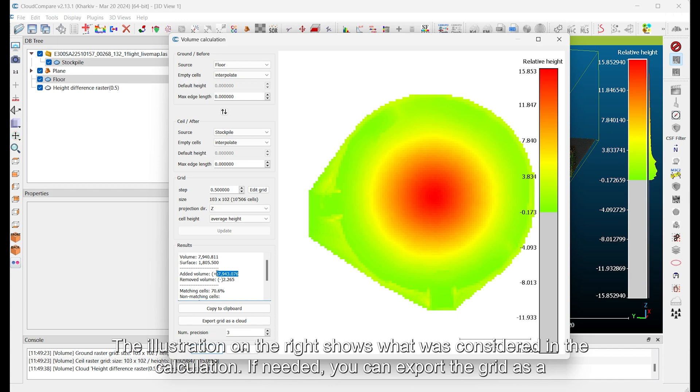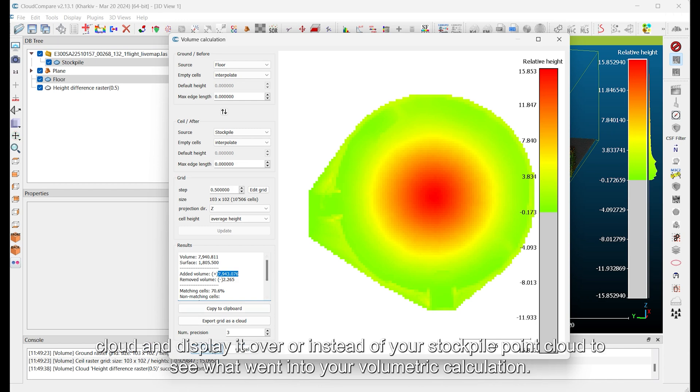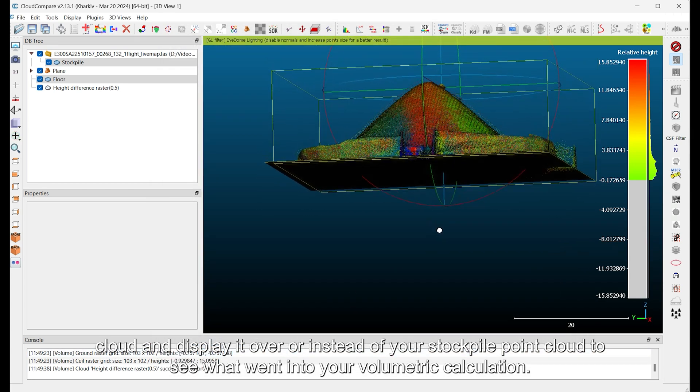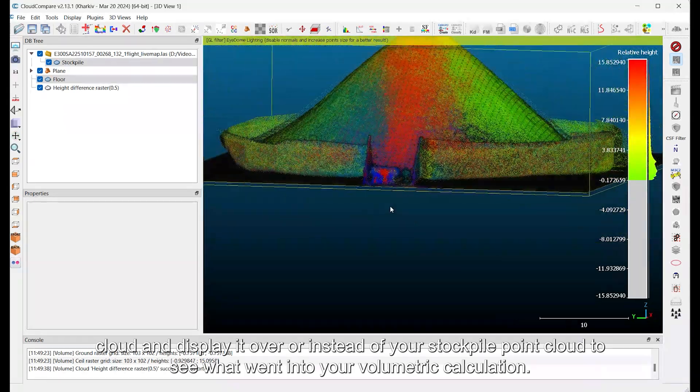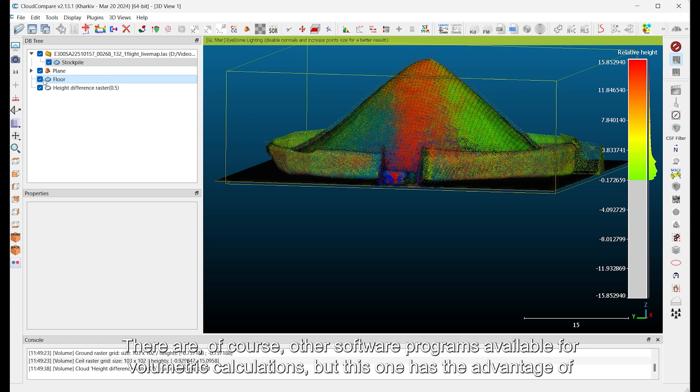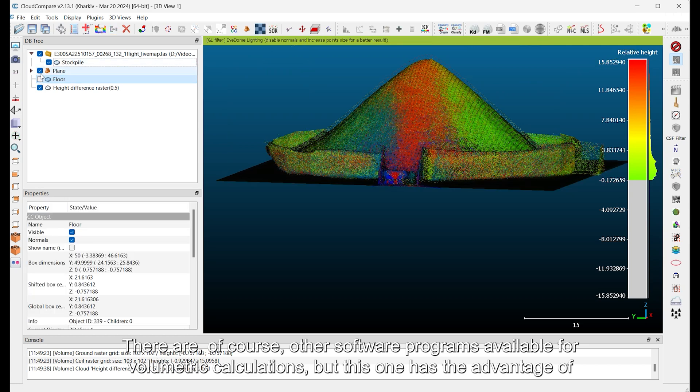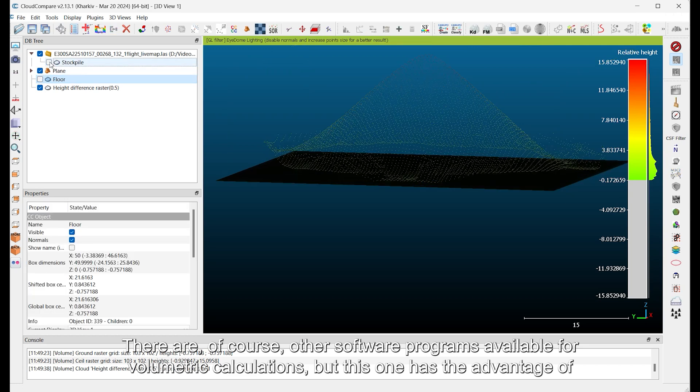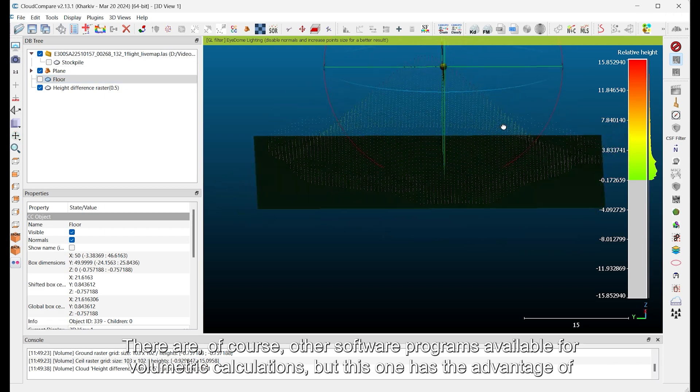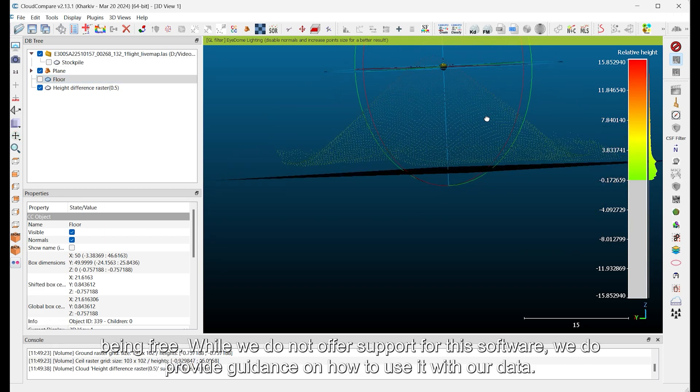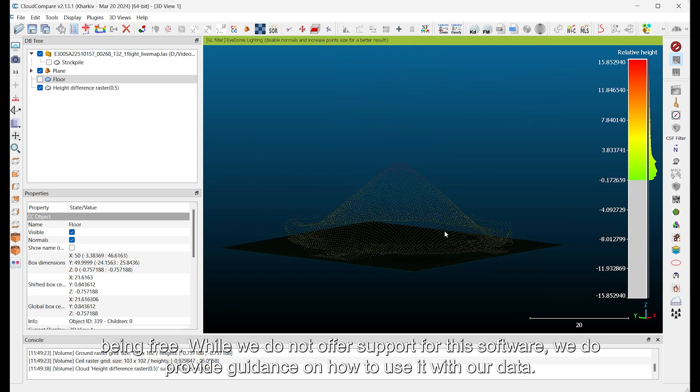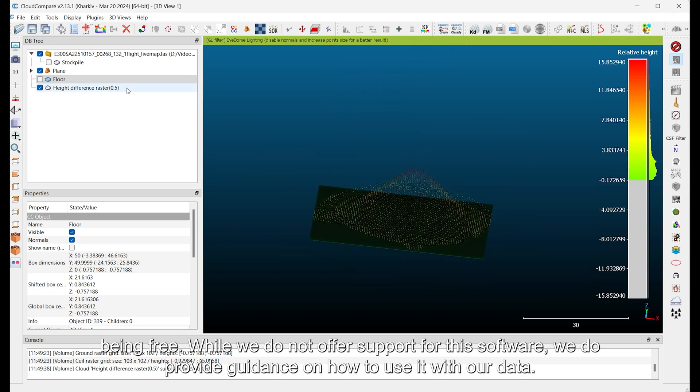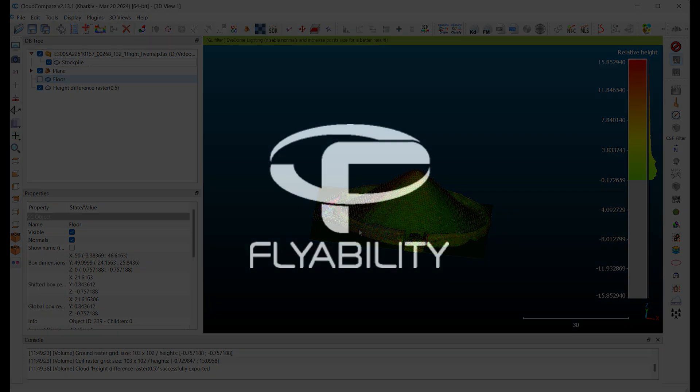If needed, you can export the grid as a cloud and display it over, or instead of your stockpile point cloud, to see what went into your volumetric calculation. There are, of course, other software programs available for volumetric calculations, but this one has the advantage of being free. While we do not offer support for this software, we do provide guidance on how to use it with our data.